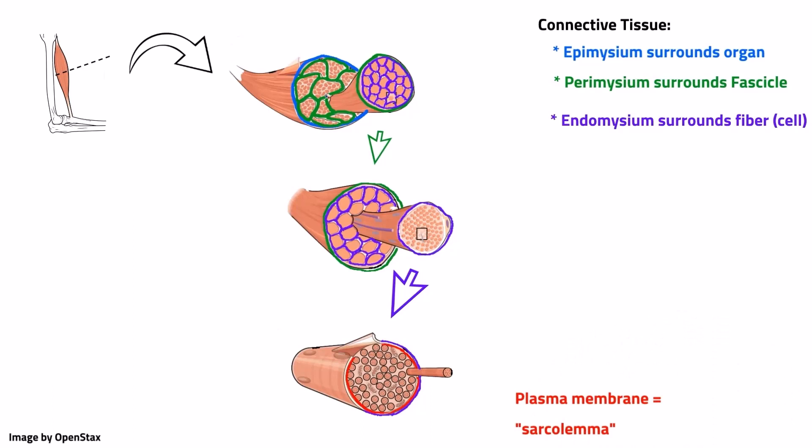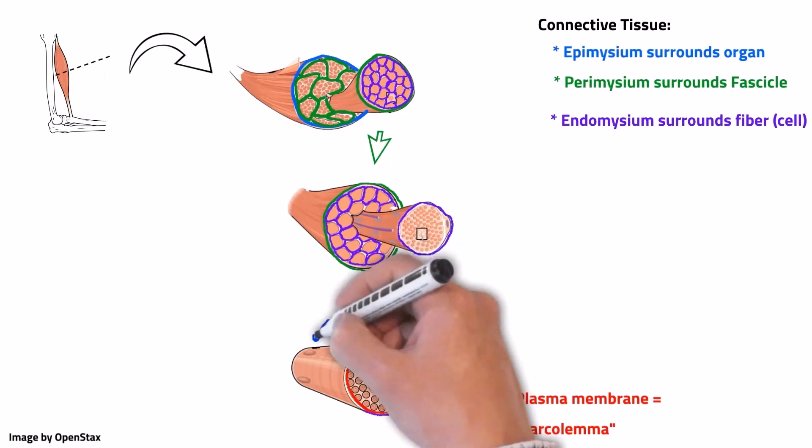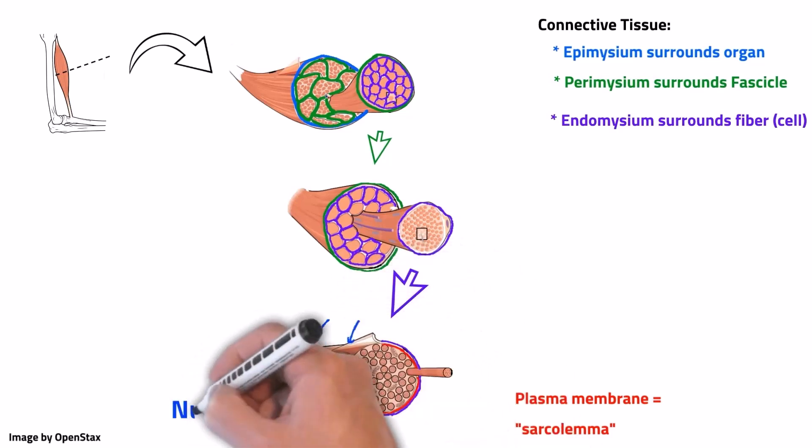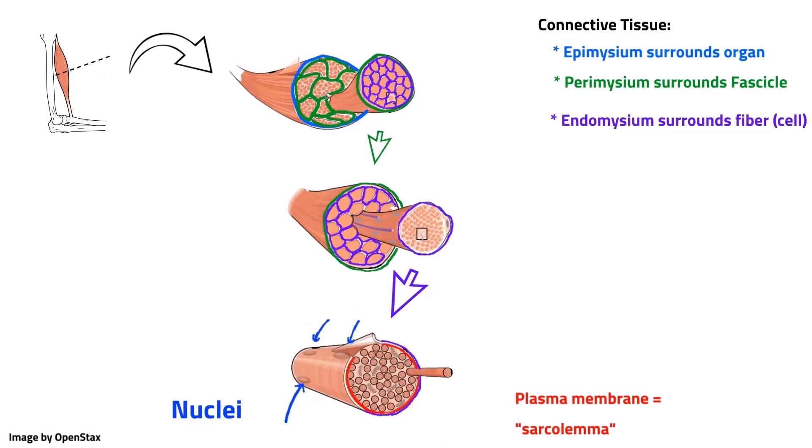The inside of the cell has the same organelles you would expect to find in any cell, like mitochondria and nuclei. Skeletal muscle fibers are special in that they have a lot of nuclei. There are long cells that span the length of the muscle. It's helpful to have genes along the length of the cell, so transcription and translation happen close to the places where we need the proteins.